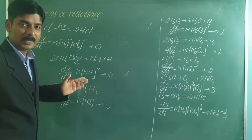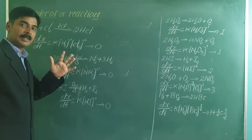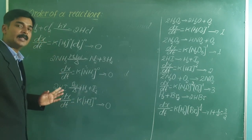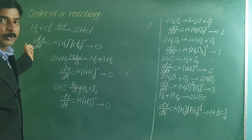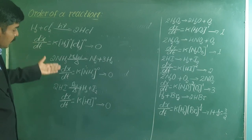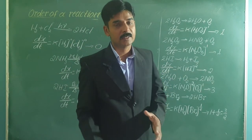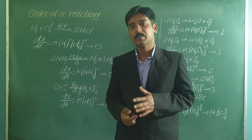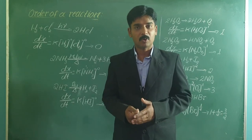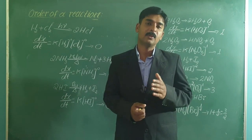In zero order reactions, increasing molar concentration of the reactant does not change the rate — rate remains the same. Reactions are also classified as second order (rate ∝ [reactant]^2), third order (rate ∝ [reactant]^3), and fractional order (rate ∝ [reactant]^fraction). In the next class, we will solve problems related to the order of a reaction, which is very important for competitive examinations.